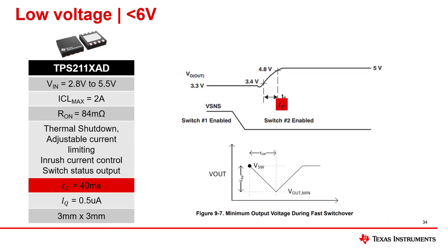One distinction between the TPS211x and TPS2116 families is how we specify timing. For the TPS211x devices, we specify a transition time, noted as TT, which measures the rise time during switchover. Moving forward, in our new devices we instead specify what we refer to as the switchover time. Since these power muxes work in a break-before-make configuration, there is a point where no voltage is delivered to the load. The switchover time TSW measures the time that no voltage is delivered to the output.